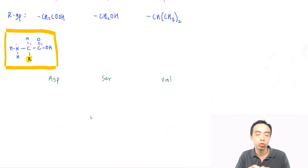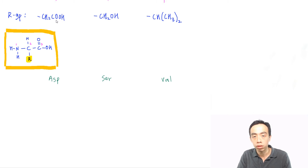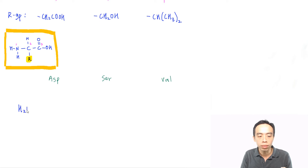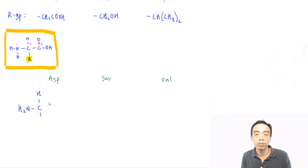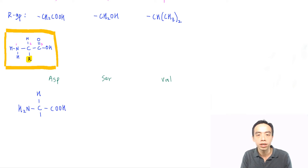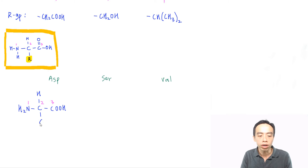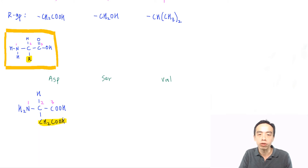Once we have the R group, we can draw back the amino acid. If I want to draw ASP and I know its R group is CH2-COOH, I use the memorized format: position 1 is an amine group, position 2 is a carbon with an R group, and position 3 is an acid group. I write NH2 at position 1, then the carbon with hydrogen at position 2 — leaving the R group to fill in later — then the acid group at position 3. The R group for ASP is CH2-COOH, so I write that in to complete the structure.